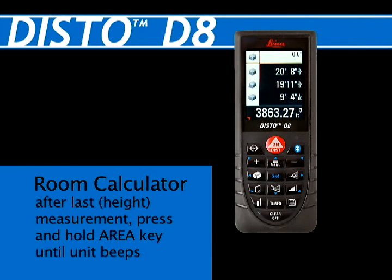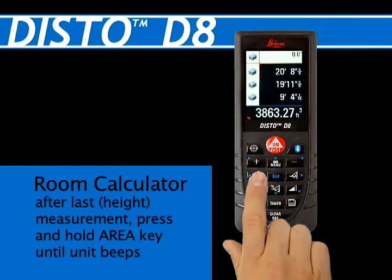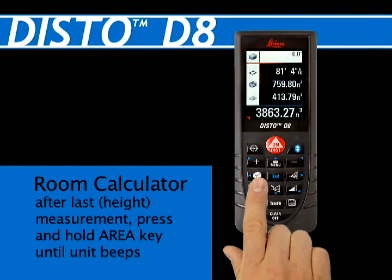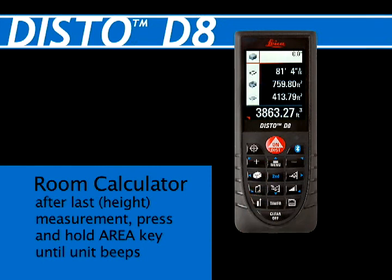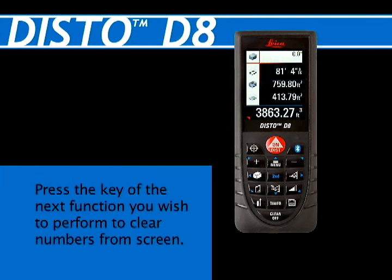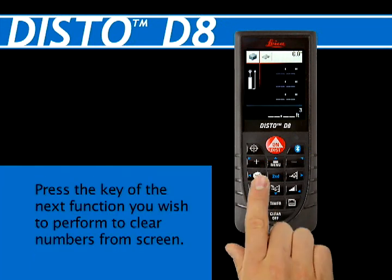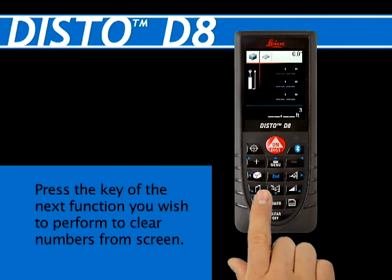To have the Disto calculate the room dimensions, press and hold the area volume key until it beeps. The Disto unit will then display the total linear measurement of the room's base, the total wall area, and the floor or ceiling area of the room. Press the button of the next function you wish to perform to clear away numbers on the screen.